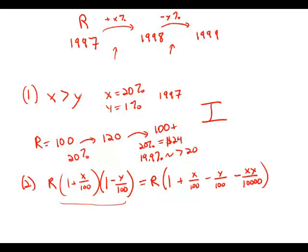And of course we want to know is this bigger than R or not. So really the question we're asking is, is this piece here bigger than zero? So X over 100 minus Y over 100 minus XY over 10,000. Is that bigger than zero?